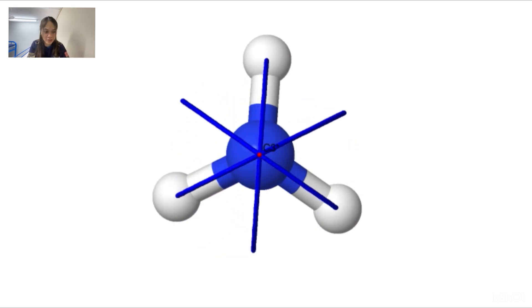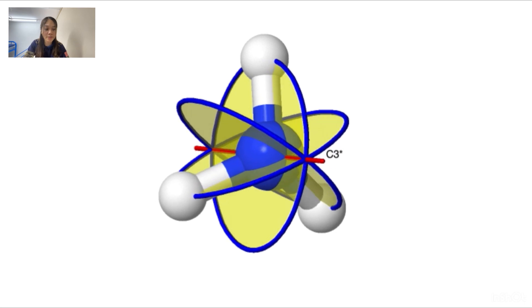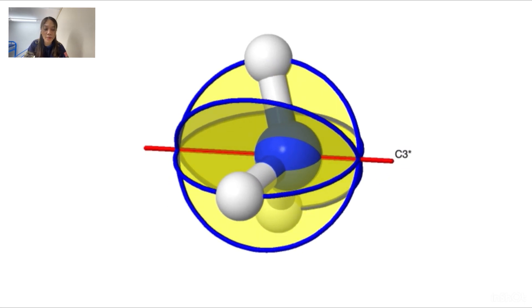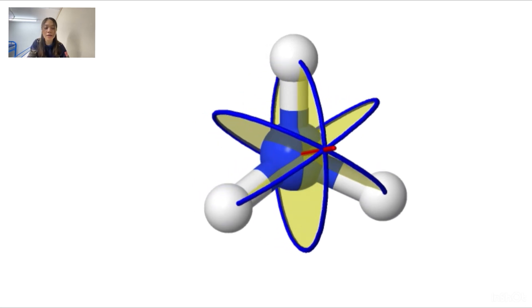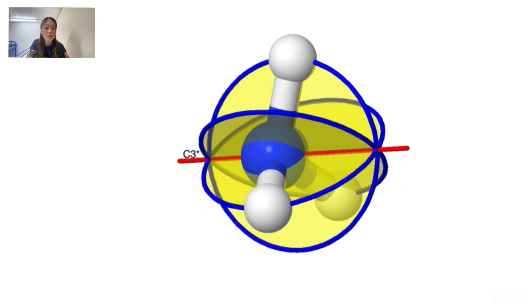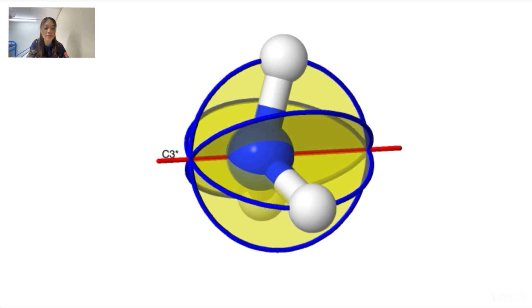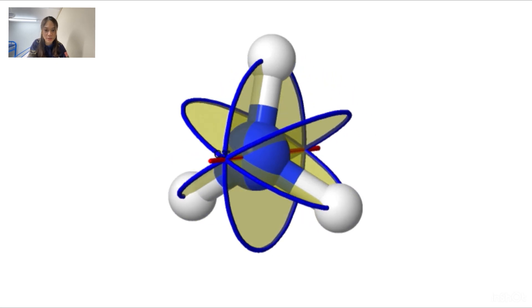Secondly, reflection. The presence of reflection plane denoted by sigma allows us to mirror image ammonia. This operation maintains the molecule's overall structure while flipping it as if in a symmetrical reflection.